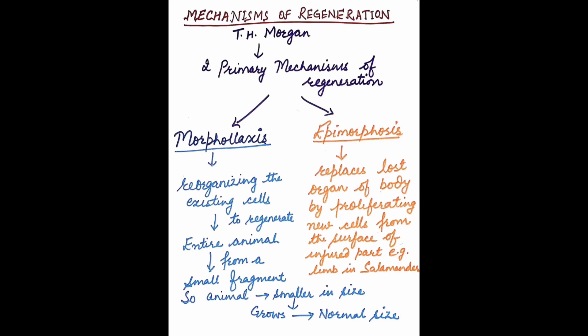Let's discuss the mechanisms of regeneration. TH Morgan proposed two primary mechanisms of regeneration: morpholexis and epimorphosis. First, let's discuss what morpholexis is.